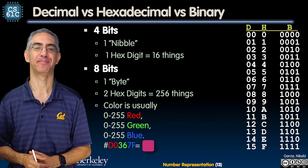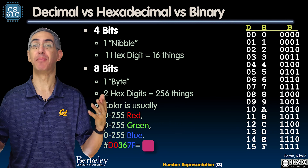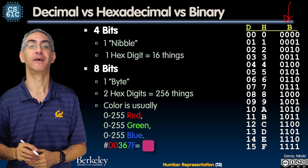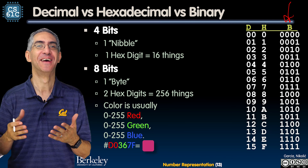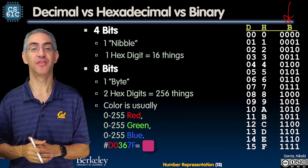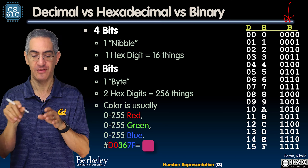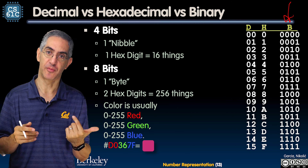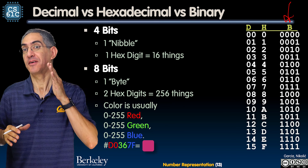Binary to hex. Here's the key: left-pad the binary number with zeros so its length is a multiple of four. If I have 11110 — five bits — add three leading zeros to make eight bits: 00011110. This works because four binary digits give 2 to the 4 = 16 things, which is exactly one hexadecimal digit.